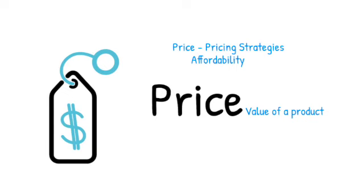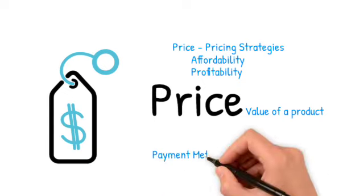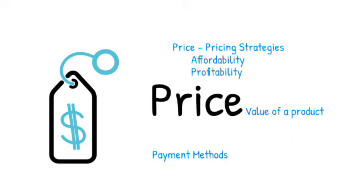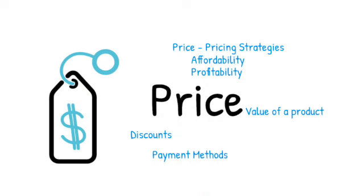Then comes another thing which is profitability. We are making it affordable for customers, but at the same time we also want to make revenue — we also need profit. So these two parameters go hand in hand all the time. And then come two other important points which are the payment method and the discounts, which are pretty straightforward to understand.